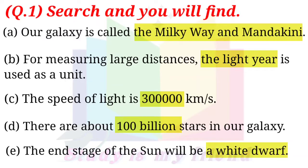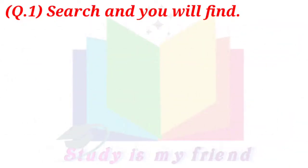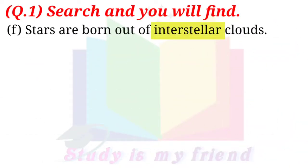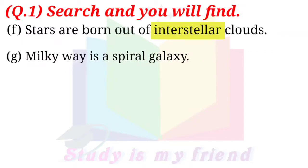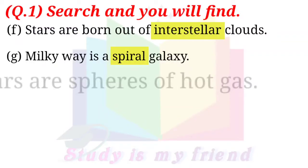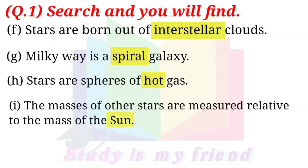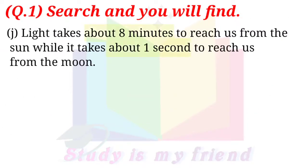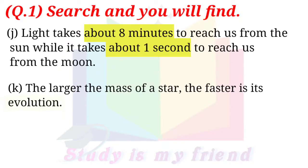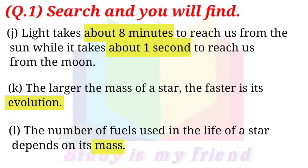E. The end stage of the sun will be a white dwarf. F. Stars are born out of interstellar clouds. G. Milky Way is a spiral galaxy. H. Stars are spheres of hot gas. I. The mass of other stars are measured relative to the mass of the sun. J. Light takes about 8 minutes to reach us from the sun, while it takes about 1 second to reach us from the moon. K. The larger the mass of a star, the faster is its evolution. L. The number of fuels used in the life of a star depends on its mass.